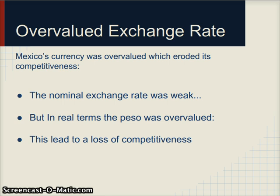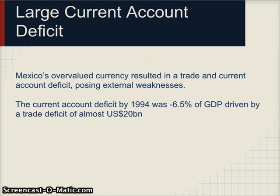So in real terms there was an overvalued currency, which led to a loss of competitiveness and a large current account deficit. The current account deficit was 6.5 percent of GDP in 1994, largely driven by a huge trade deficit of about 20 billion dollars. As the currency appreciated, exports became less competitive while it became cheaper for Mexicans to buy products from abroad, meaning imports rose while exports fell, worsening the current account deficit.